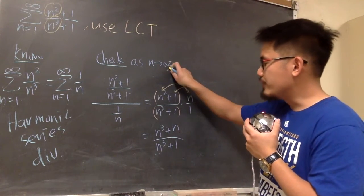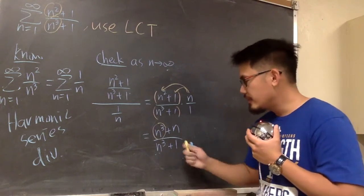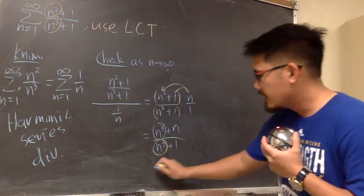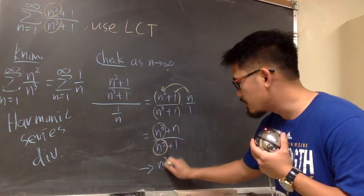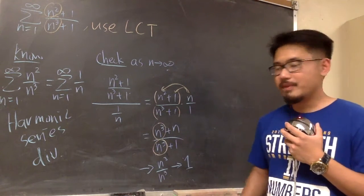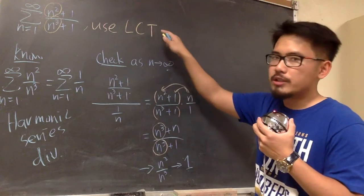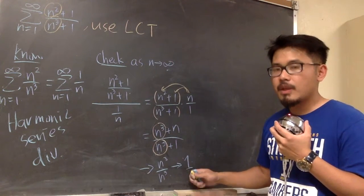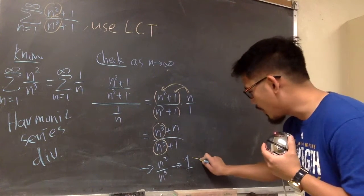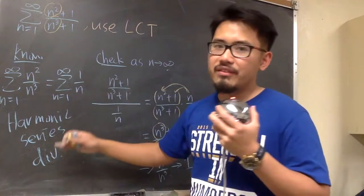As n goes to infinity, this expression — we just care about n to the third power on the top; the plus n doesn't matter. On the denominator, we only care about the n to the third power; the plus 1 doesn't matter. So this approaches n to the third power over n to the third power, which approaches 1. When we are doing the limit comparison test, when we get a finite value for the limit — make sure this is not 0, make sure this is not infinity — this is 1, it's good, which is greater than 0.